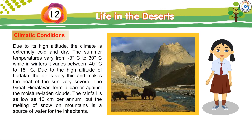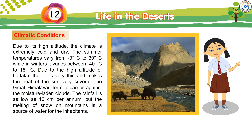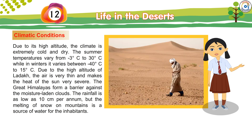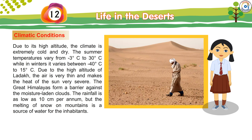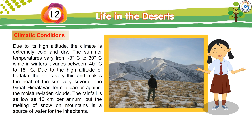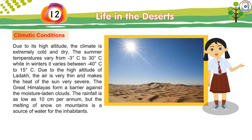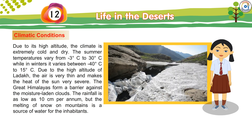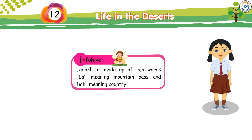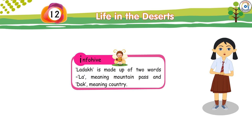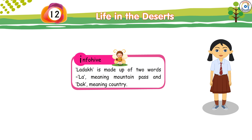Climatic Conditions: Due to its high altitude, the climate is extremely cold and dry. The summer temperatures vary from minus 3 degrees Celsius to 30 degrees Celsius, while in winters it varies between minus 40 degrees Celsius and 15 degrees Celsius. Due to the high altitude of Ladakh, the air is very thin and makes the heat of the sun very severe. The Great Himalayas form a barrier against the moisture-laden clouds. The rainfall is as low as 10 centimetres per annum, but the melting of snow on mountains is a source of water for the inhabitants. Info Hive: Ladakh is made up of two words — La meaning mountain pass and Dak meaning country.